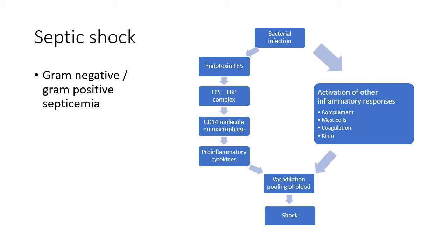Other inflammatory systems also activated by bacterial infection include the complement system, coagulation cascade, and kinin system. The end result — vasodilation and peripheral pooling of blood — causes a reduction in venous return to the heart, consequent reduction in cardiac output, and consequent hypotension and hypoperfusion, leading to septic shock.